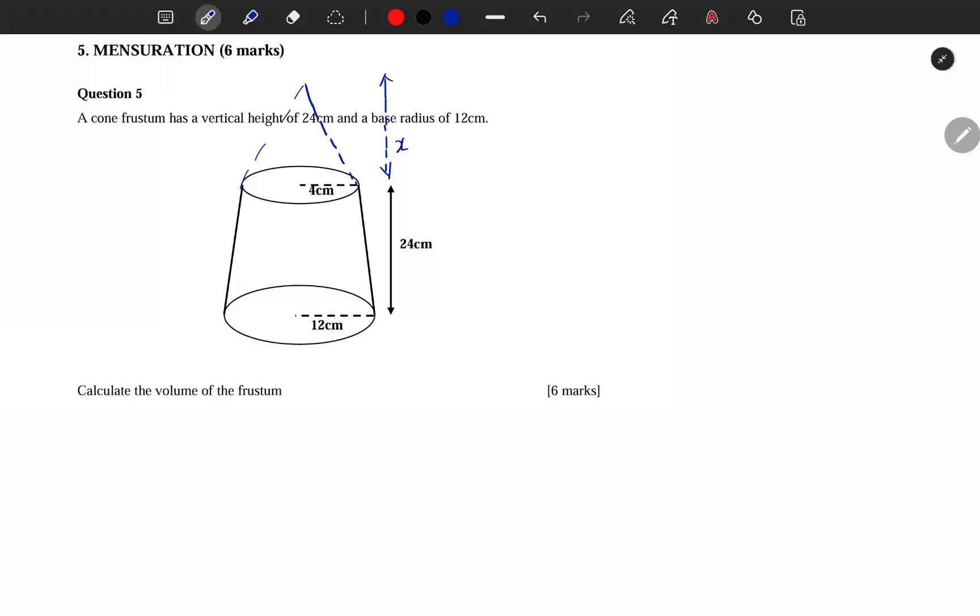Now remember that from here we are getting two cones, and let me show you what cones we are getting. I have this small cone here. There's like a cone which is being given by this.